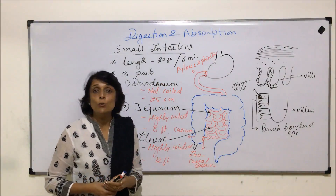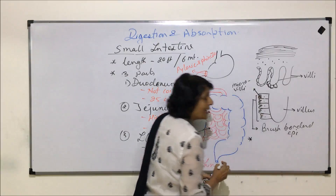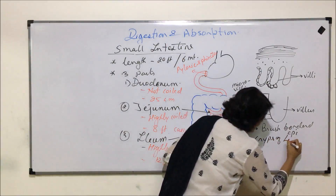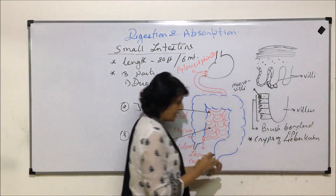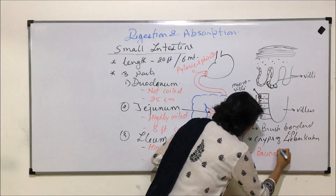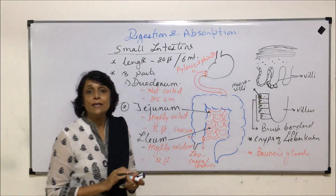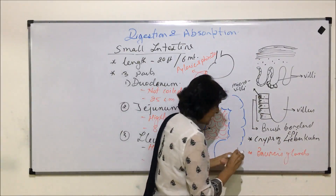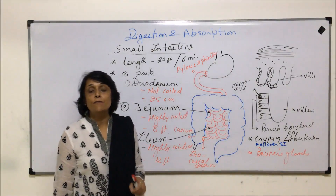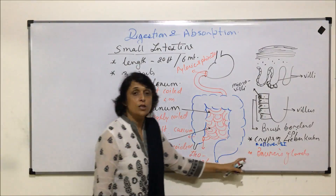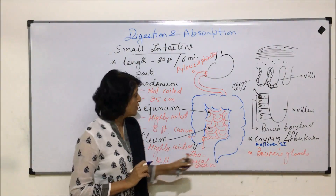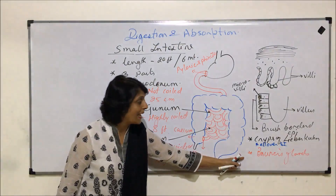The intestine is lined with glands, and these intestinal glands are mainly of two types. One is known as crypts of Lieberkühn, and the second are known as Brunner's glands. Crypts of Lieberkühn are present all over the small intestine, whereas Brunner's glands are found only in one part of the small intestine. Let us make the diagram to understand the location of these two glands.